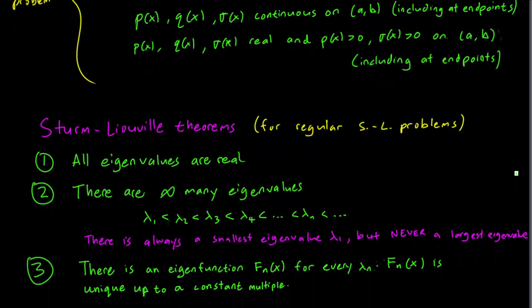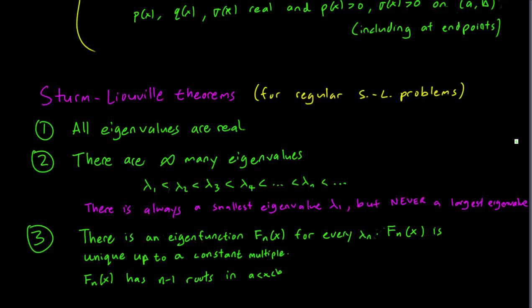The third theorem states that there is an eigenfunction for every eigenvalue and that this eigenfunction is unique up to a constant multiple. You have seen this before in our previous investigations where the eigenfunction was typically either a sine or cosine and you could get other eigenfunctions by multiplying the sine or cosine by a constant. Secondly each of those eigenfunctions has n minus 1 roots in the interval x between a and b and this was true for our eigenfunctions sin pi over L.